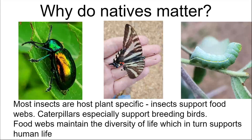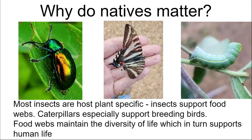Many valuable insects are host-plant specific — that's why nothing eats the callery pear. Insects usually eat a specific species or group of species. For example, the dogbane beetle eats dogbane, which is a somewhat weedy but native plant that also has fiber uses. The zebra swallowtail's only host is pawpaw — if you see zebra swallowtails, you know there must be pawpaws around, because they cannot grow without that host.